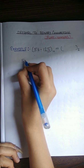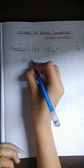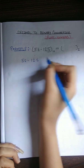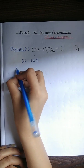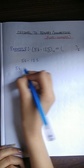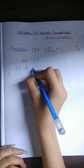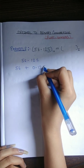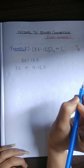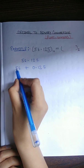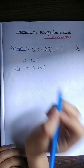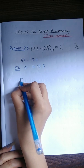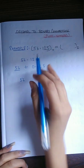First of all, split this number: 56.125 equals 56 plus 0.125. We will convert each part separately, starting with 56.